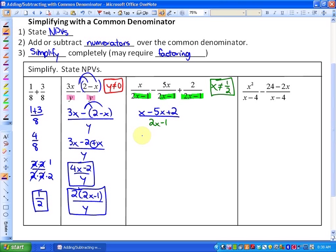As we collect like terms, we have negative 4x plus 2 over 2x minus 1. You could factor out 2 if you'd like. There's kind of two options. You could factor out 2 and be left with negative 2x plus 1. But you'll notice that negative 2x plus 1 and 2x minus 1 are exact opposites.